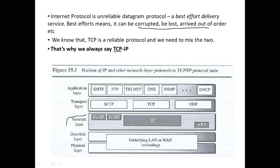To summarize: IP protocol is not reliable — it tries its best but sometimes needs support, which is why TCP comes into play. IP belongs to the network layer. ICMP helps with error situations, and IGMP helps with multicasting. In the next video we'll discuss more details about the IP packet and how the IP protocol actually works.